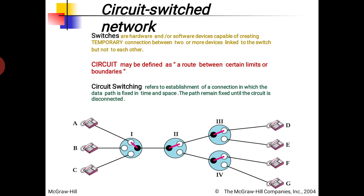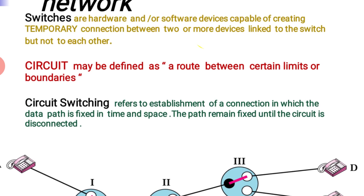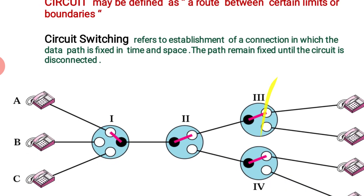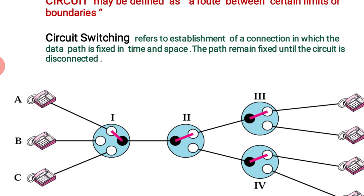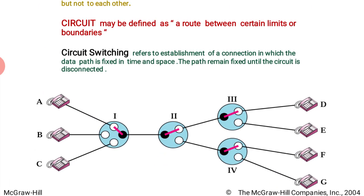First we should understand what is switching. A switch is a hardware or software device capable of creating a temporary link or temporary connection between two or more devices linked to the switch but not to each other. A circuit may be defined as a route between certain limits or boundary.